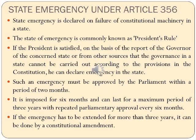The second type of emergency is the State Emergency under Article 356. The State Emergency is declared on failure of constitutional machinery in the state, and is commonly called the President's Rule. If the President is satisfied, based on the report of the Governor of the concerned state or from other sources, that the governance of the state cannot be carried out in accordance with the provisions of the Constitution, then he can declare emergency in that state.